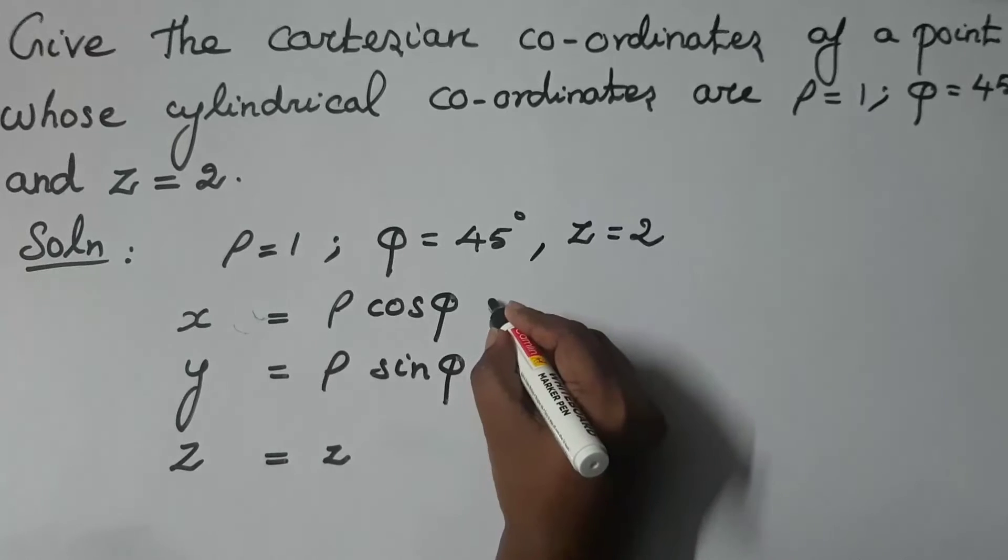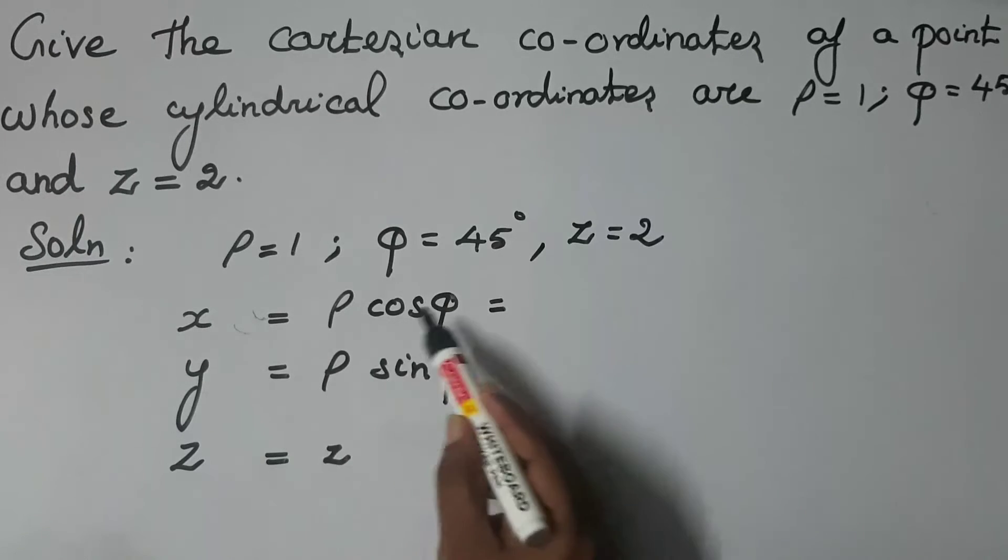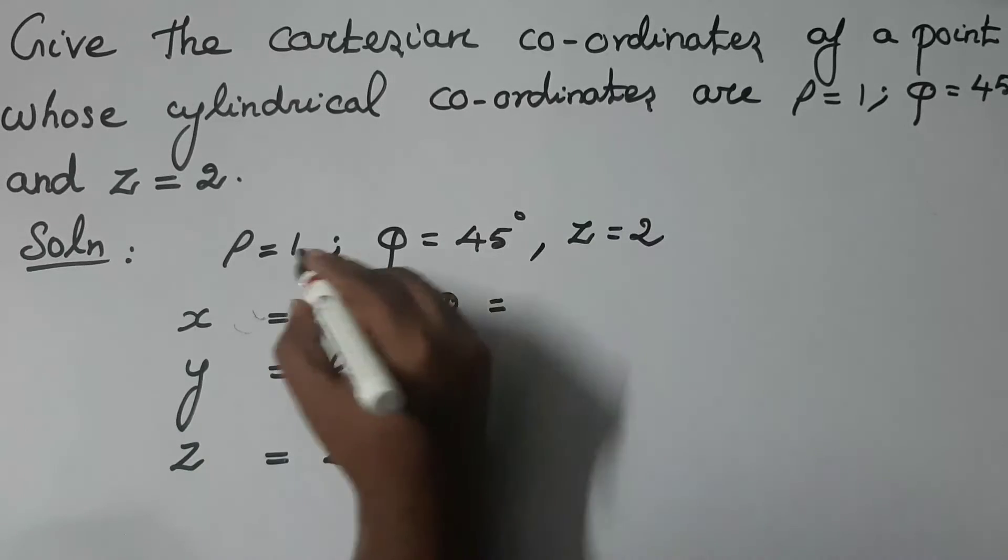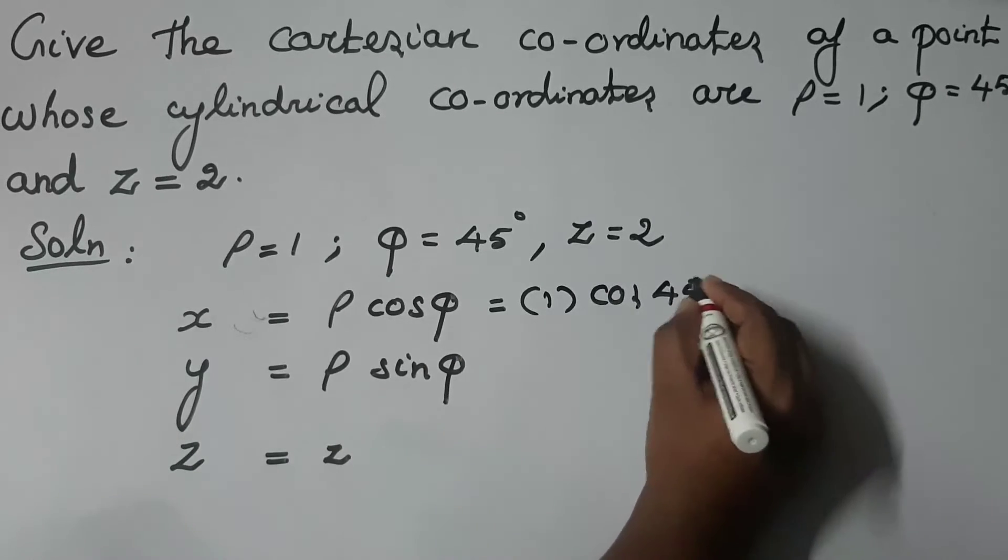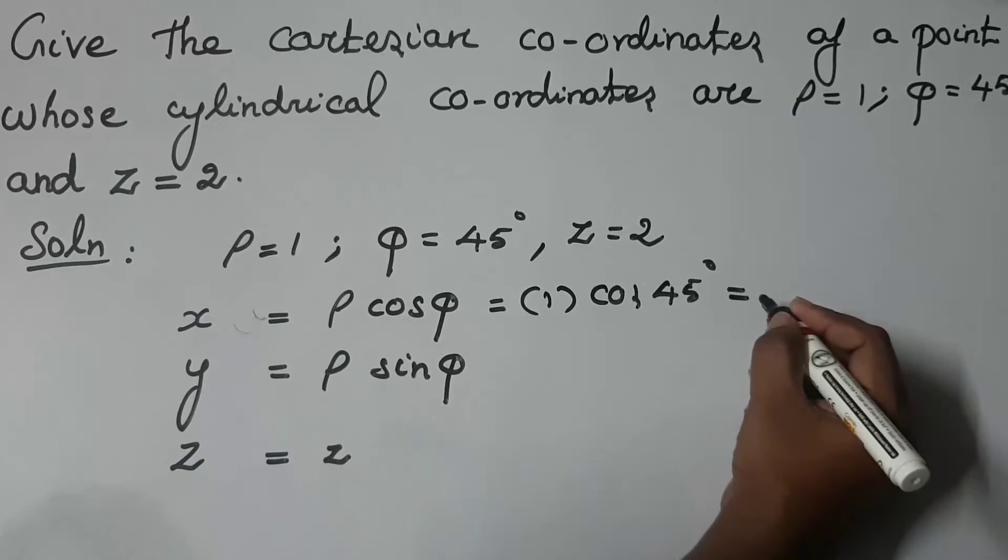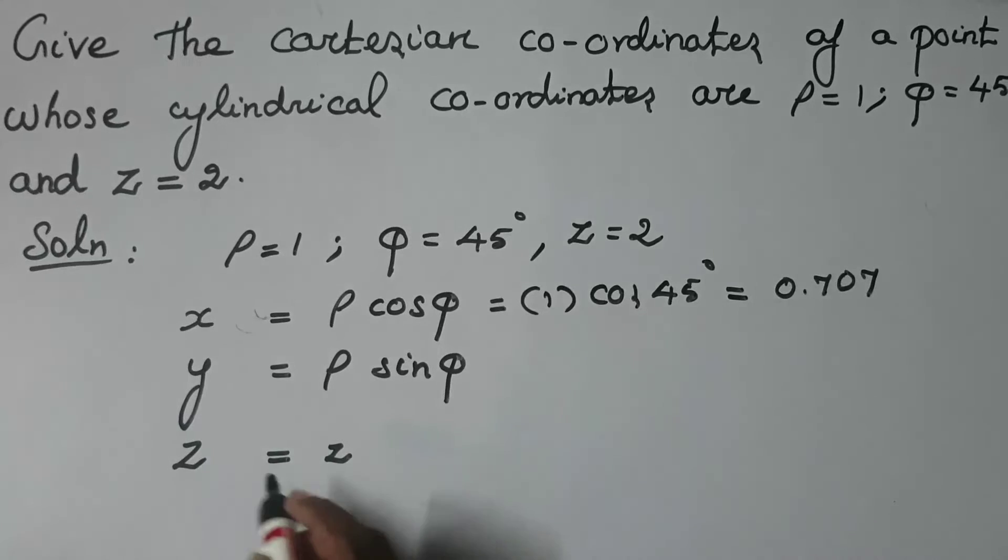So X value is equal to, put all the values, ρ and φ value. So ρ is equal to 1. Then cos 45 degrees is equal to 0.707.